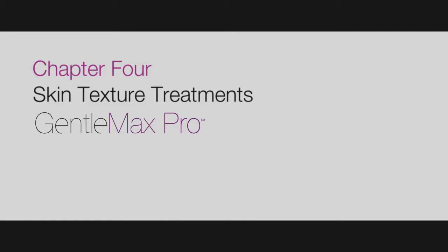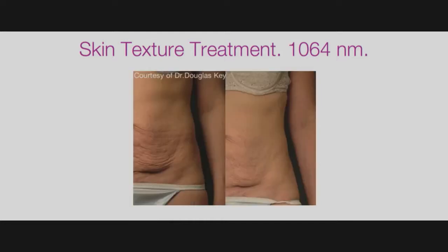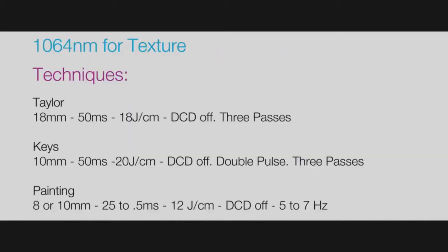Chapter 4: Skin Texture Treatments. Skin texture treatments with the 1064 nanometer wavelength allow for deep heating of the dermis, resulting in collagen formation and subsequently improved tone and texture.